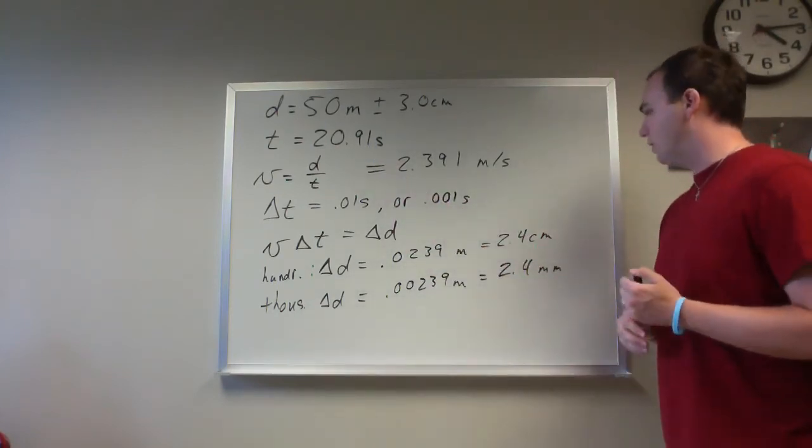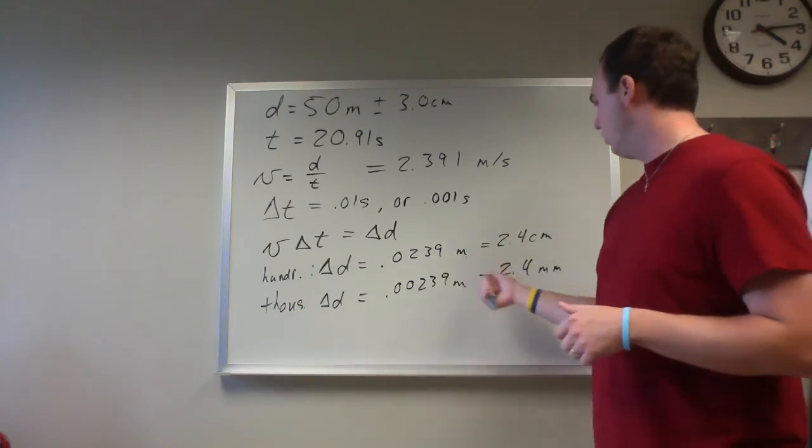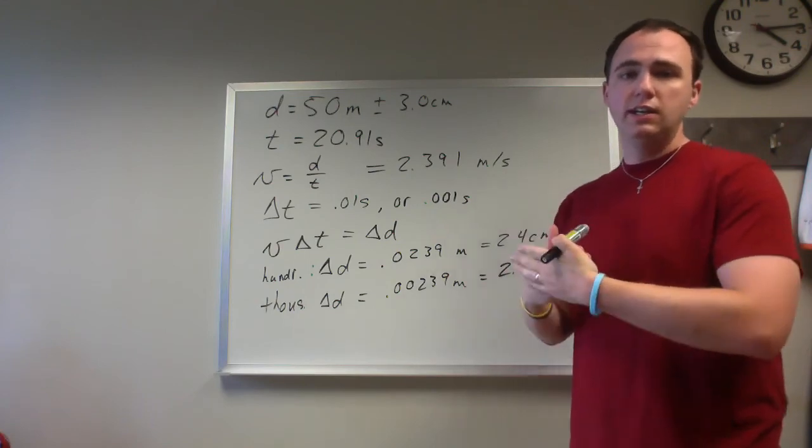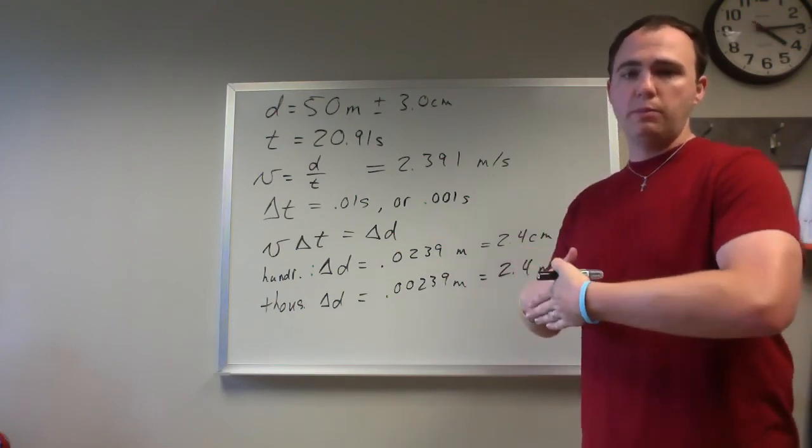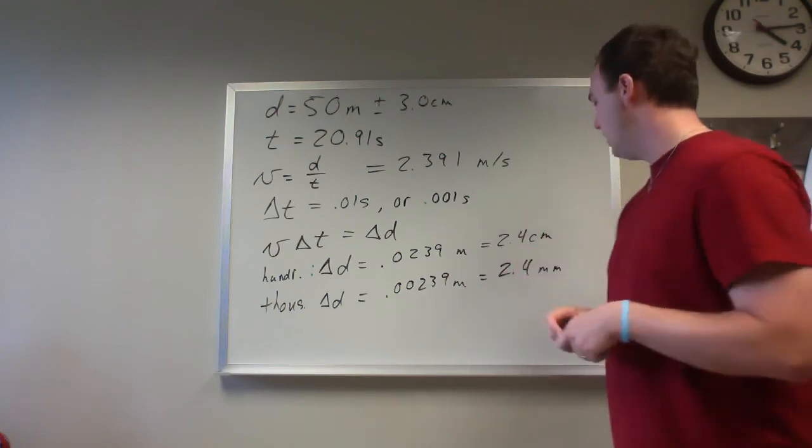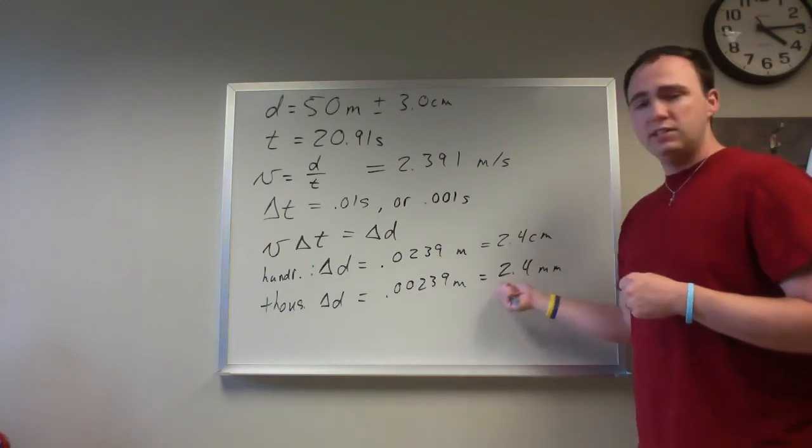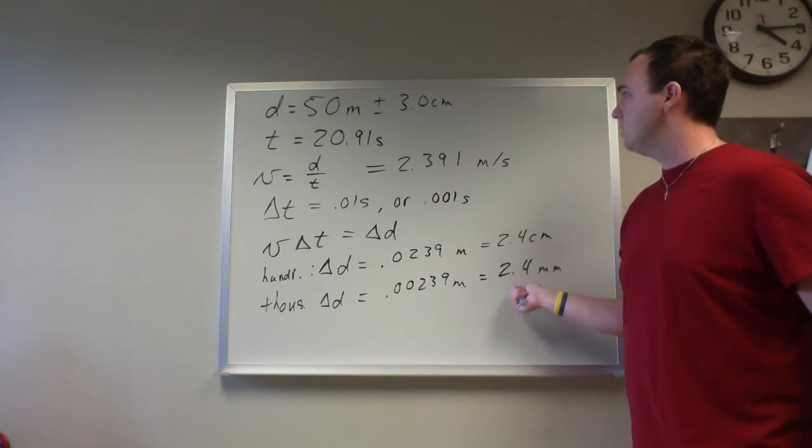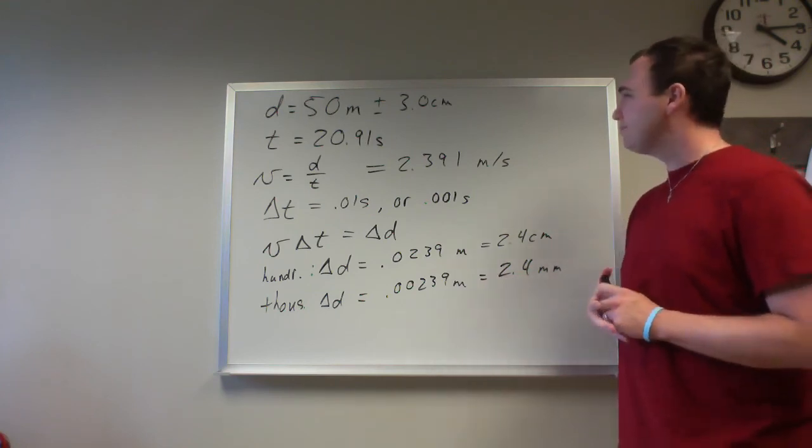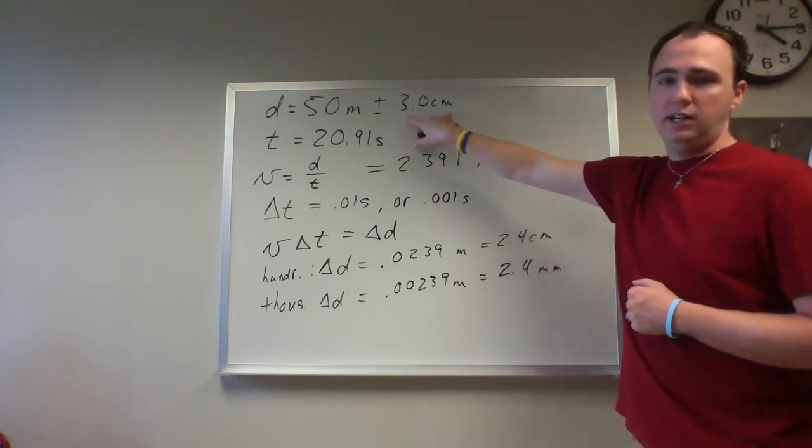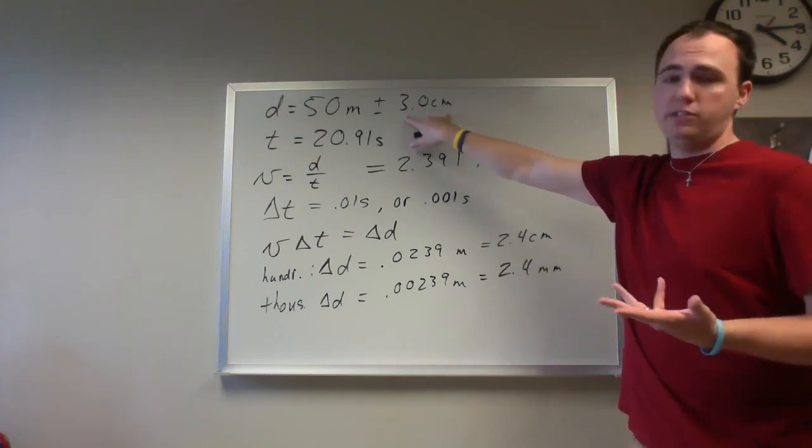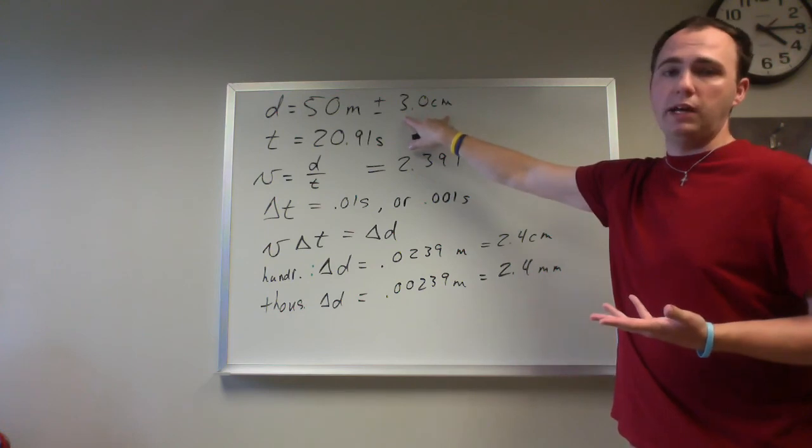So somebody who's swimming at or near world record times for the 50 meters is going to be going 2.4 millimeters in a thousandth of a second. So if you say first and second place are separated by a thousandth of a second, what you're saying is one person touched the pad when they were 2.4 millimeters ahead of the second place person. But considering that the first place person's lane or either person's lane might be shorter by up to three centimeters, rewarding them for winning by 2.4 millimeters is not a true measure of their swimming ability.